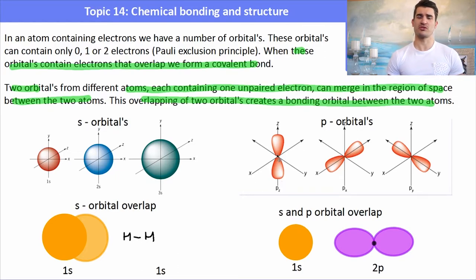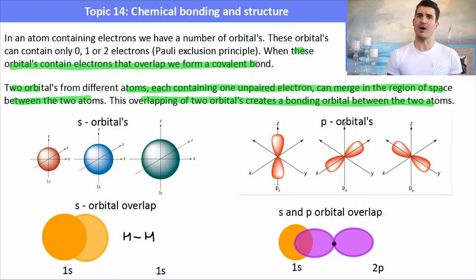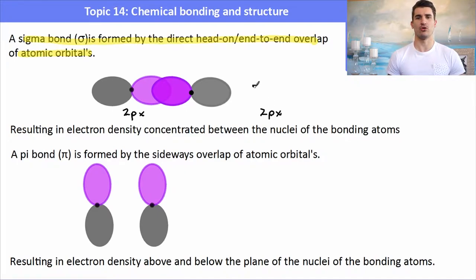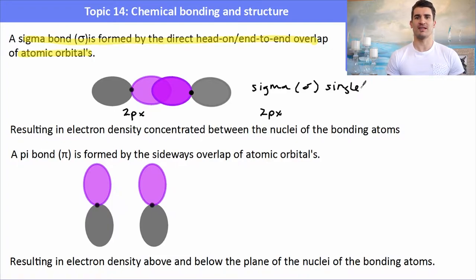If we have the P orbitals — which look a little bit like dumbbells — we have PX, PY, and PZ. We could have overlap between a 1S orbital and one of the P orbitals, and that would form a single bond as well, something like a carbon-hydrogen bond. To form a sigma bond, we have end-on-end or head-to-head overlap of atomic orbitals. So if we get two PX orbitals and they overlap, we create a sigma bond. A sigma bond is a single bond, with electron density concentrated between the nuclei.